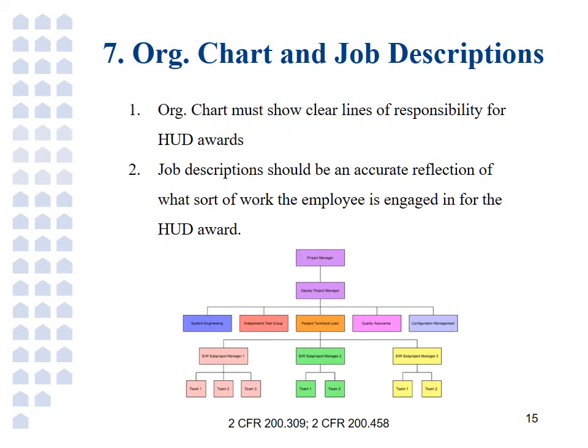After Strategies has completed a monitoring visit, we will fill out a set of tools published by HUD to record the results of our visit. One of the questions on HUD's tools asks if there is an organization chart that establishes clear lines of responsibilities for all HUD awards. Org charts can be complex, but it must be possible to trace the lines of responsibility from top to bottom of those employees working on the HUD award. Job descriptions, of course, should be an accurate reflection of what the people on the org chart are doing. It should be in line with what is set forth in their job description, should be for eligible activities per regulations, and should also match the activities they are reporting on their timesheets.